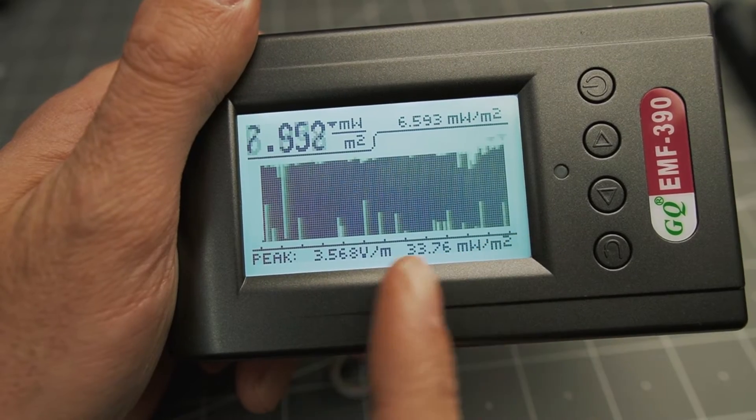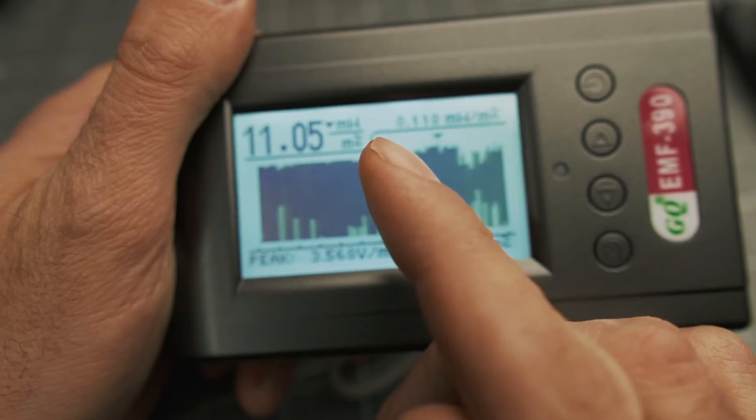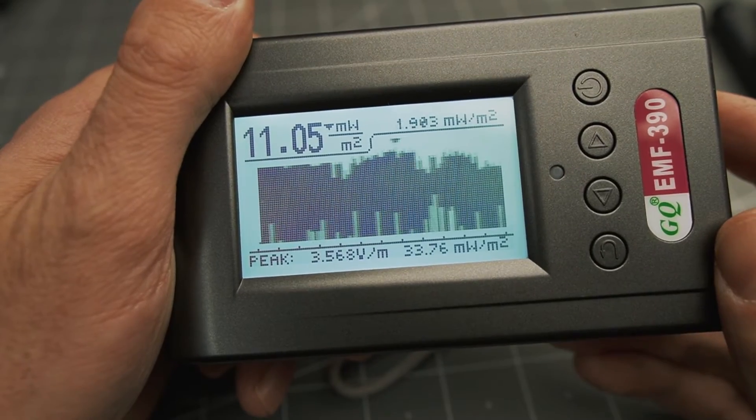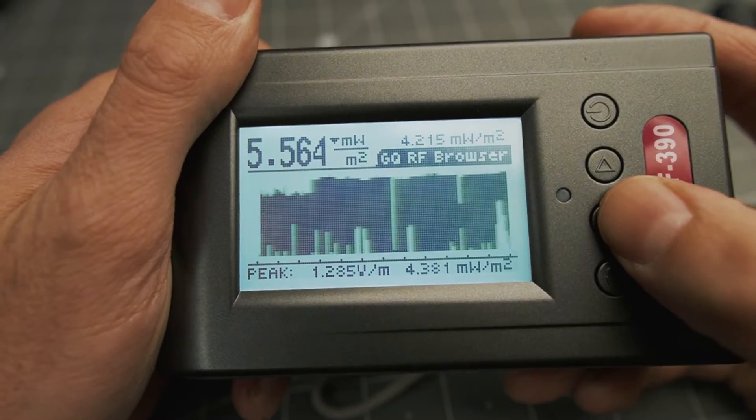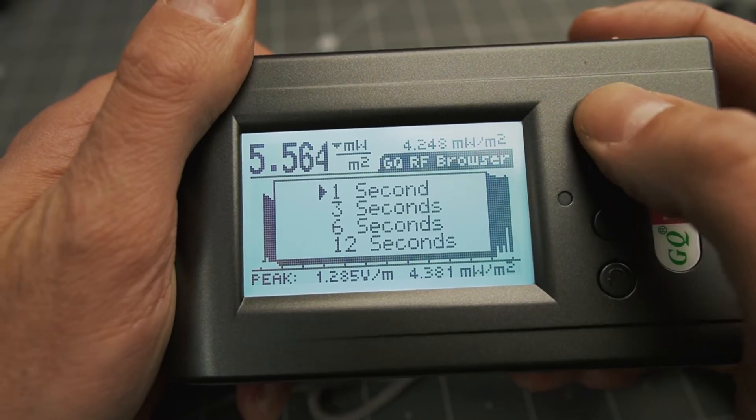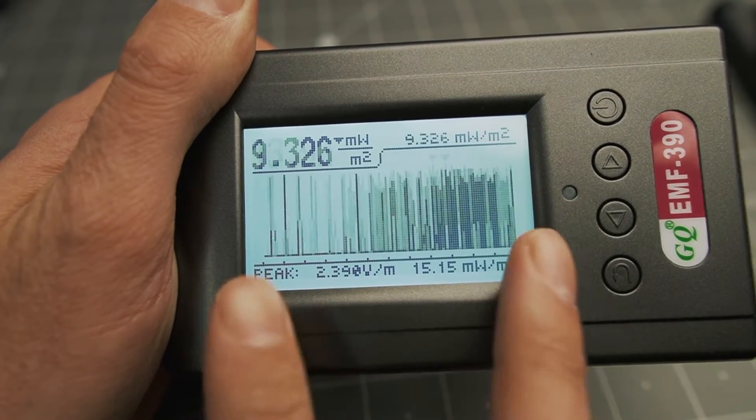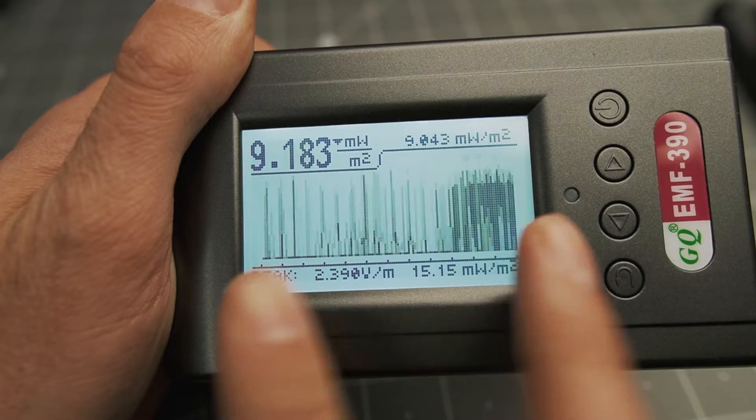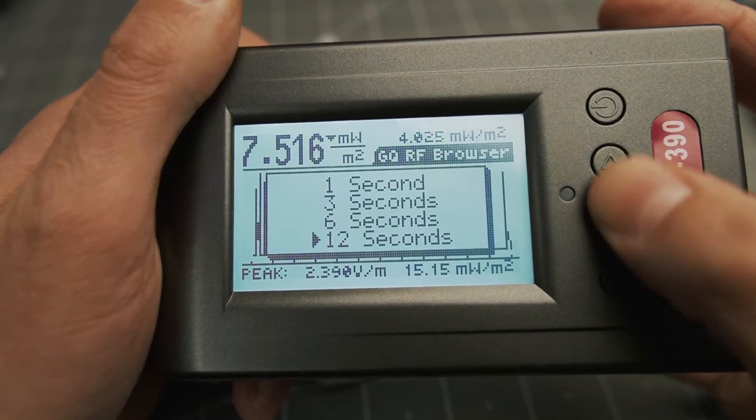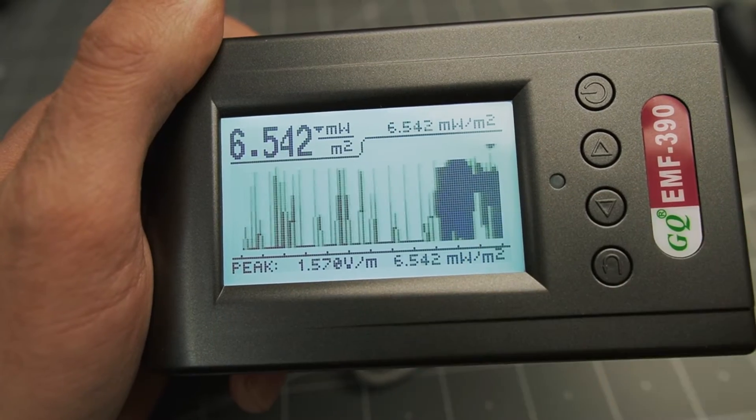So what we're looking at here is a sliding graph of RF signal measured in milliwatts per meter squared over time. You can change the time scale that's displayed by clicking this button right here and selecting a new timeframe. So one second is going to slide by a lot faster because the graph only represents one second of time. And a 12 second timeframe is going to go by a lot slower, but everything's going to be a little more compressed.